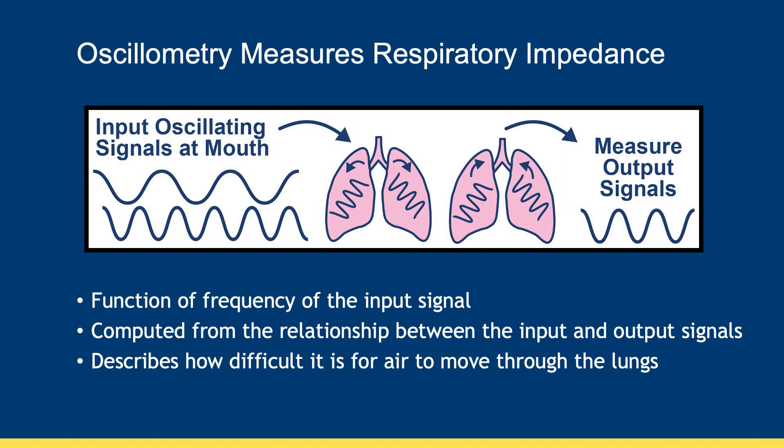The oscillometry measurement is performed using a device that applies different frequencies of oscillating airflow or pressure at the mouth during normal breathing and then measures the oscillating pressure or flow generated by the lungs in response. Respiratory system impedance is computed from the relationship between the pressure and flow oscillations, and this measurement indicates how hard it is for air to move through the lungs.